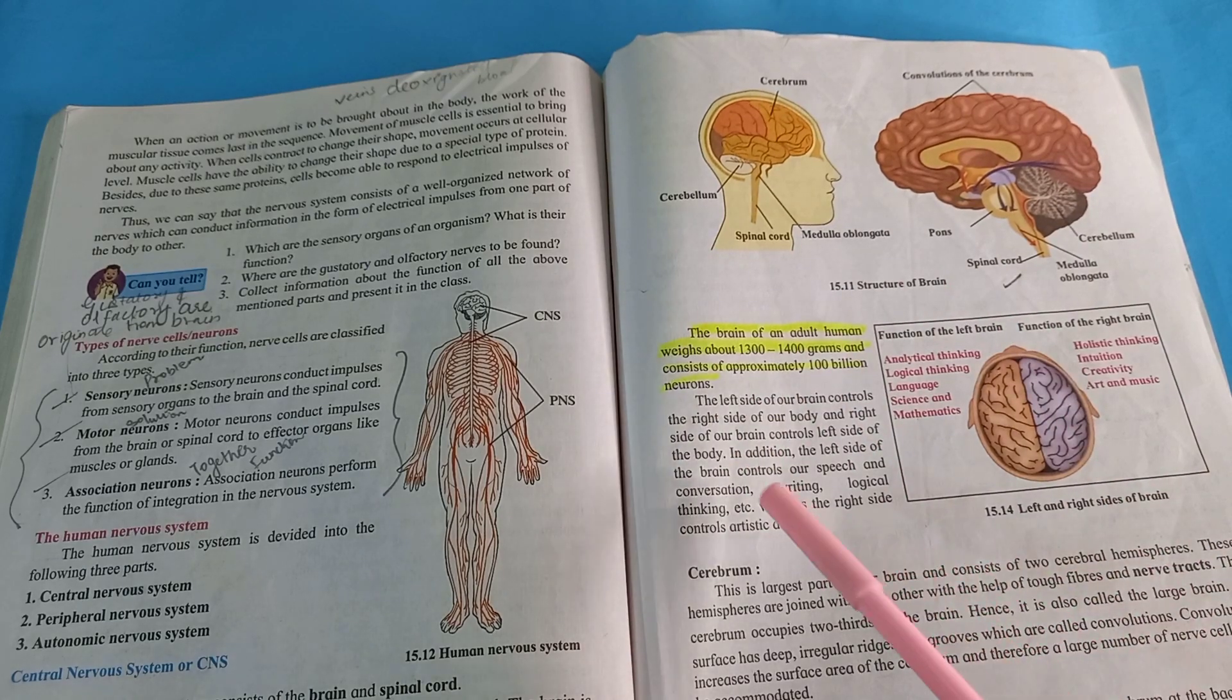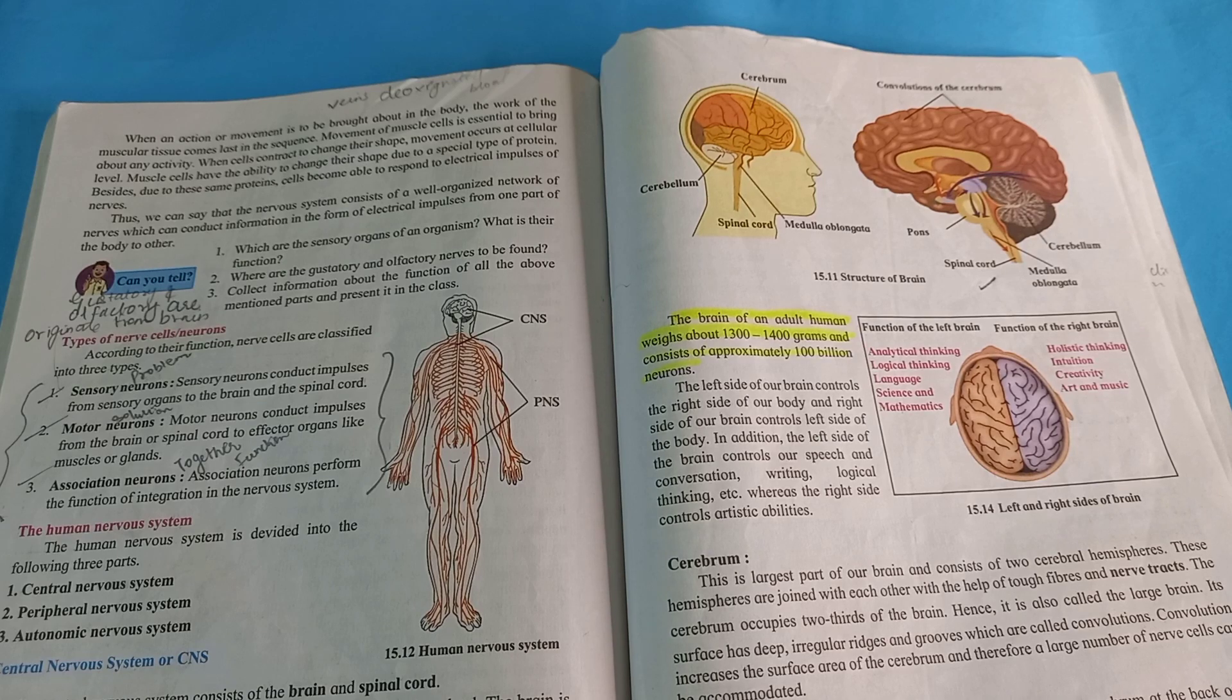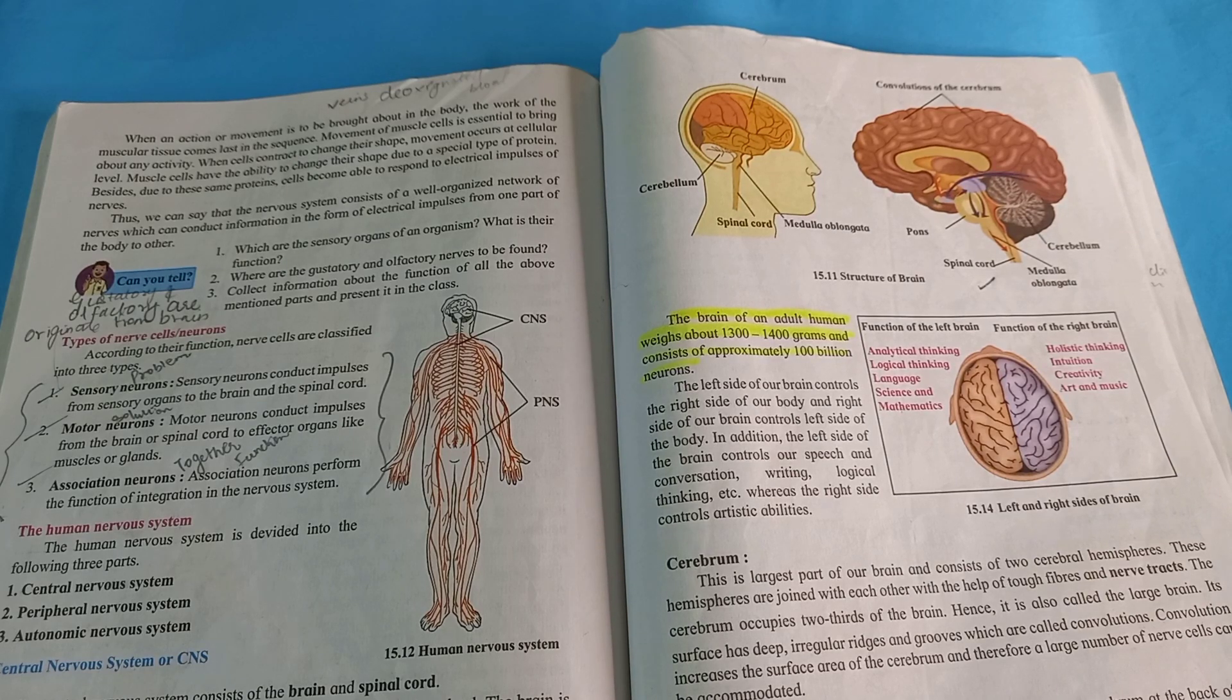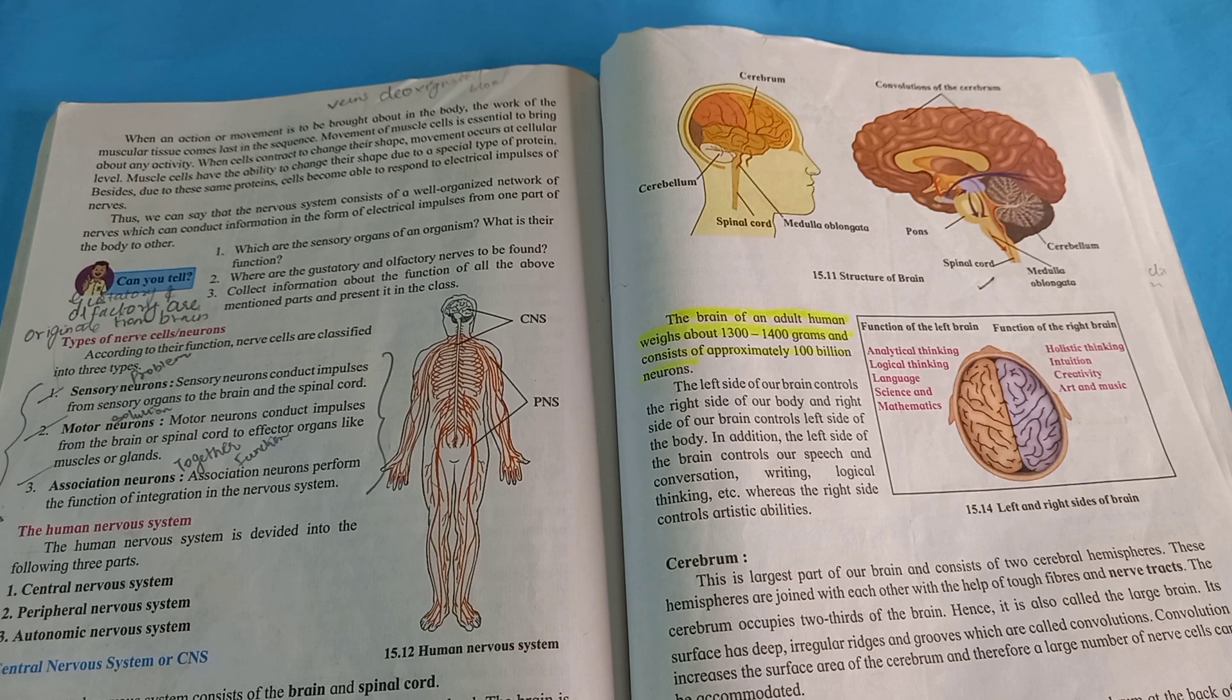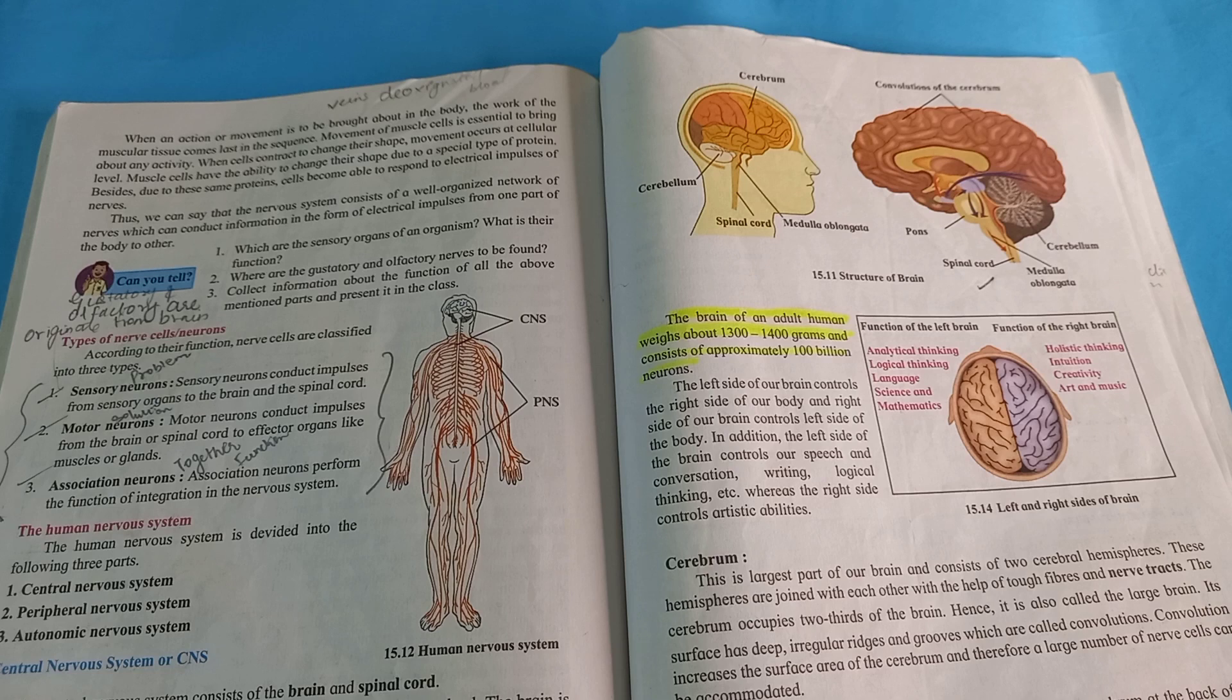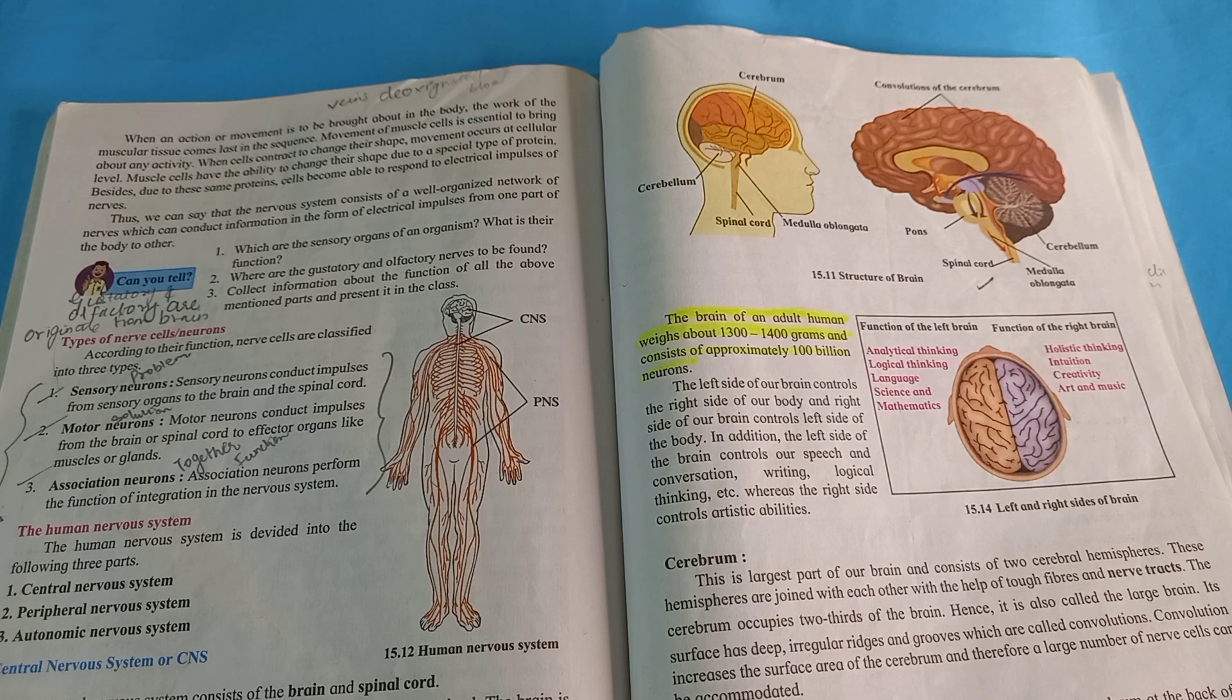The left side of our brain controls the right side of our body. Jo left side hai mara brain ka, wo right side body ko control karta hai. And the right side of our brain controls the left side of the body. Aur jo aapka right side ka brain hai, wo left side ko control karta hai.